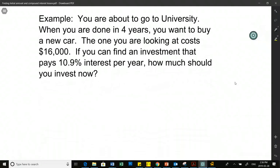Last one. So you are about to go to university. When you are done in four years, at the end of university, you want to buy a new car. The one you're looking at costs $16,000. If you can find an investment that pays 10.9% interest per year, very hard to find, very volatile investment, how much should you invest now? Invest now. What does that tell us we're looking for? Initial value. Yes. Our initial value in our compound interest formula is P. It's our principal value. That's our unknown. When you see words like start, now, initially, stuff like that, that's asking for your starting value.